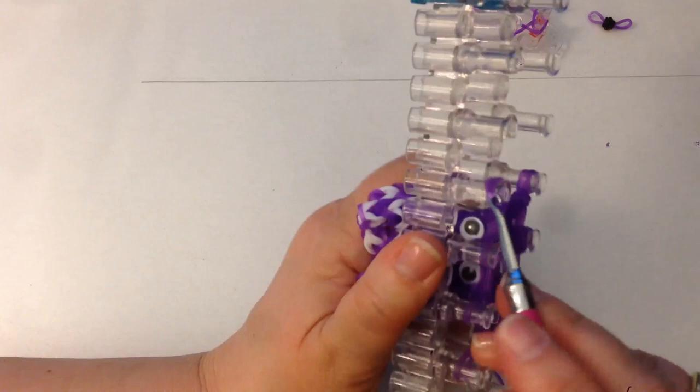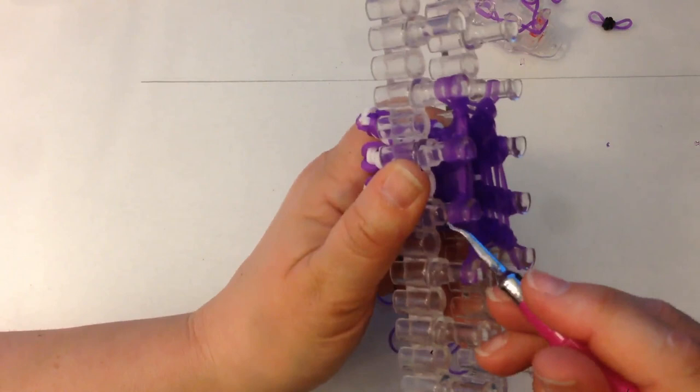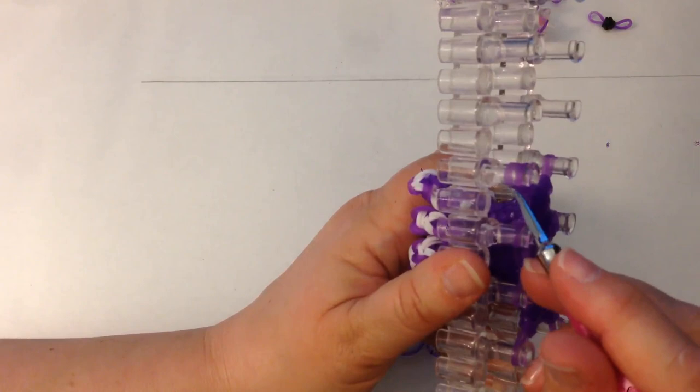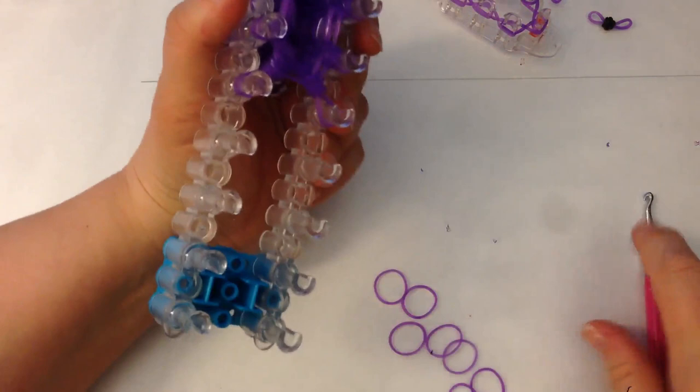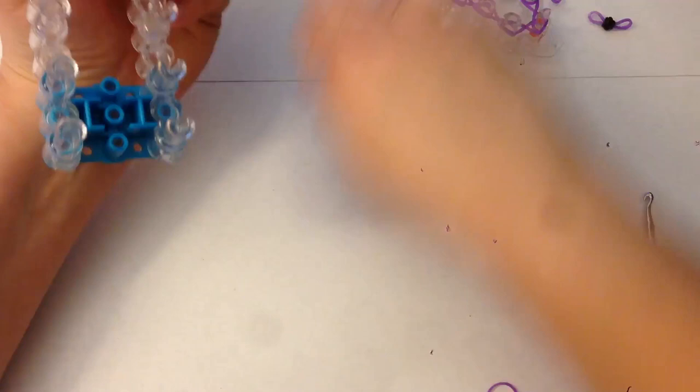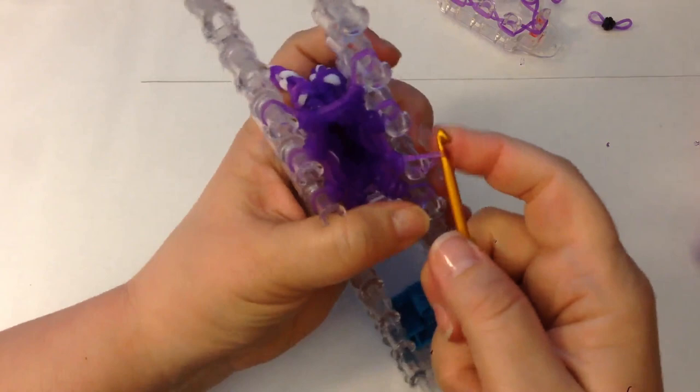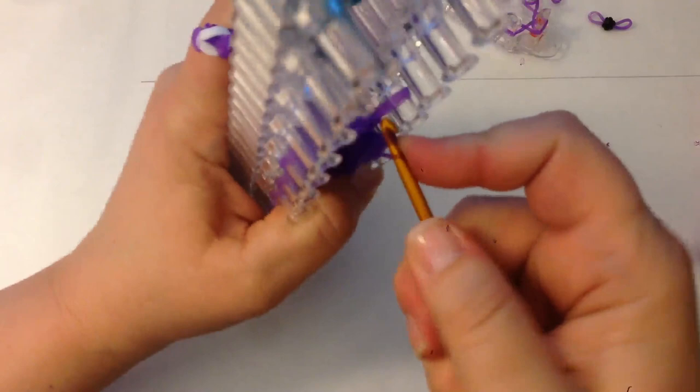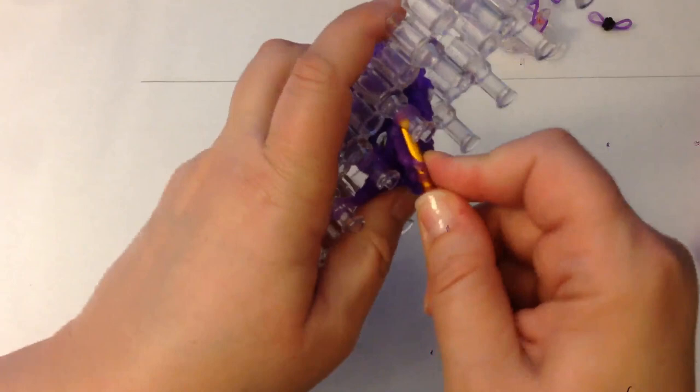So, push them down because when you take it off the loom, you don't want to accidentally have one fall off. Now, looking where the eyes are, you want to go the opposite side because that's where we're going to tie off. So, grab the first one and then work your way around collecting all of these bands onto your hook.